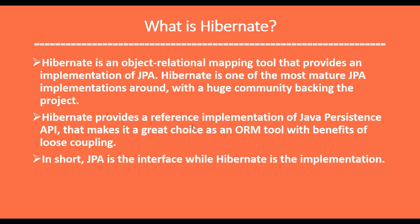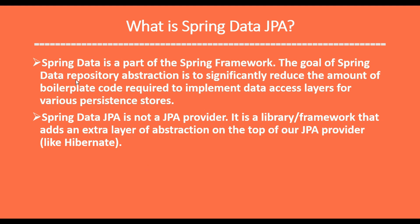Now what is Spring Data JPA? Spring Data is a part of the Spring Framework, and the goal of the Spring Data repository is to provide abstraction to significantly reduce the amount of boilerplate code required to implement a DAO layer for various persistent stores. Whenever we connect to any database, we need to write a lot of code to connect, get the data, process the data, and provide CRUD operations — create, delete, update, read SQL queries. But Spring Data JPA just provides abstraction and reduces the amount of code required.